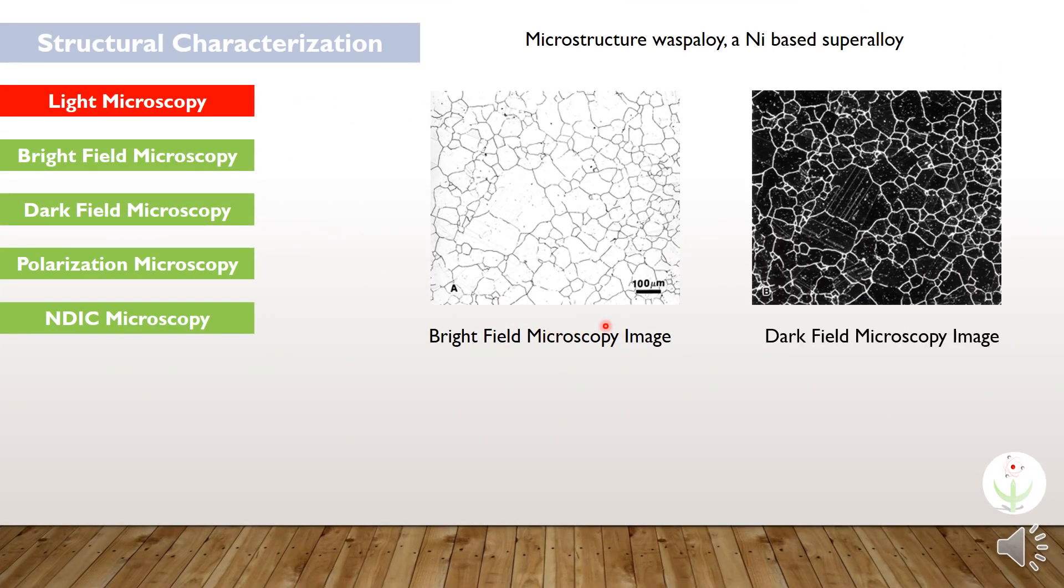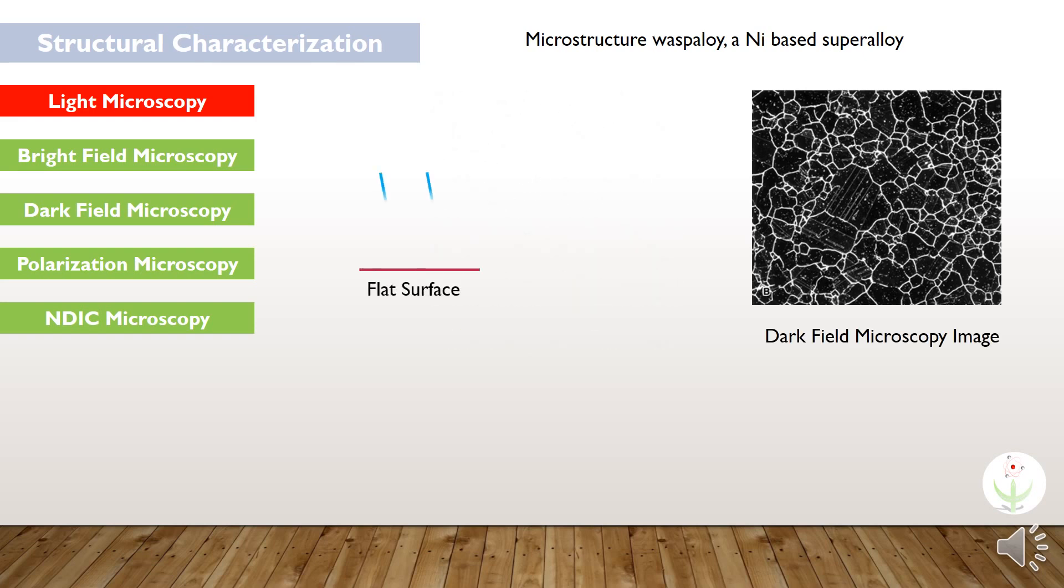This same image has been taken from dark field microscopy. You can see the difference. The bright areas are now dark and the dark areas are now bright. The reason is that, in this technique, the light scattered by the flat surface remains uncaptured.